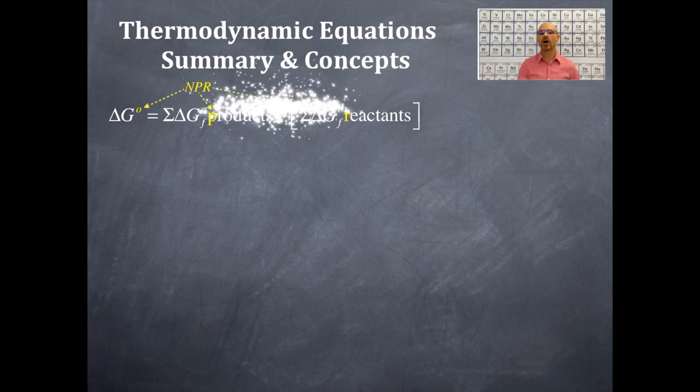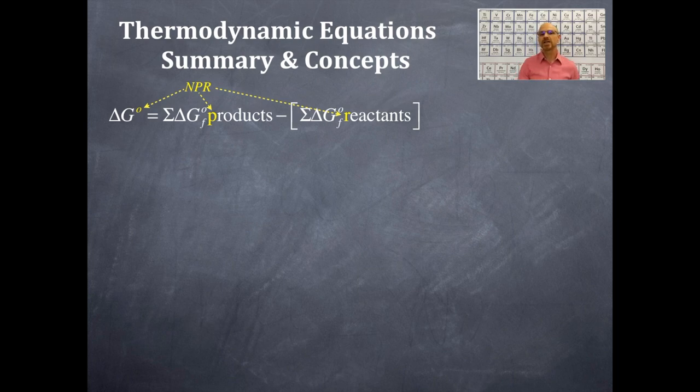And then the P in the public radio is for products, so it's the products, and the R is for reactants. So it is delta G naught is equal to the sum of the products minus the sum of the reactants. Notice I've also included some brackets around the reactants. So if you have multiple reactants, that should help you maintain that sign. Either you distribute that negative sign, or you do everything inside the brackets first, and then deal with the negative sign.